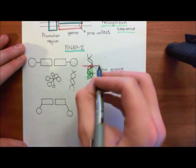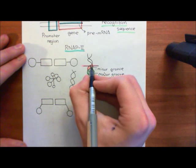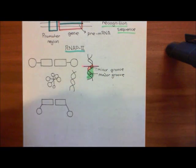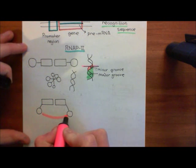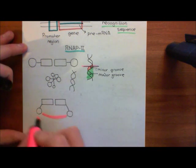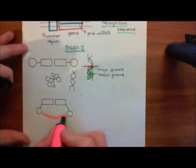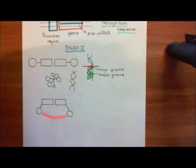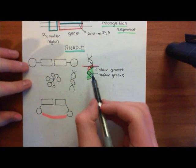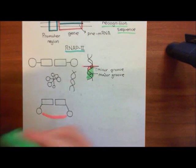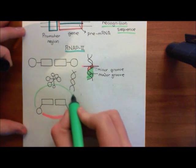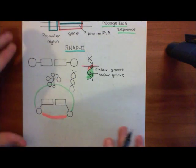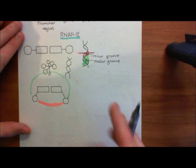When we're looking from one side and we've got a minor groove facing us, we are looking at the small, closed portion. When we see a major groove, we are looking at this larger side. That is what causes the major and the minor grooves.